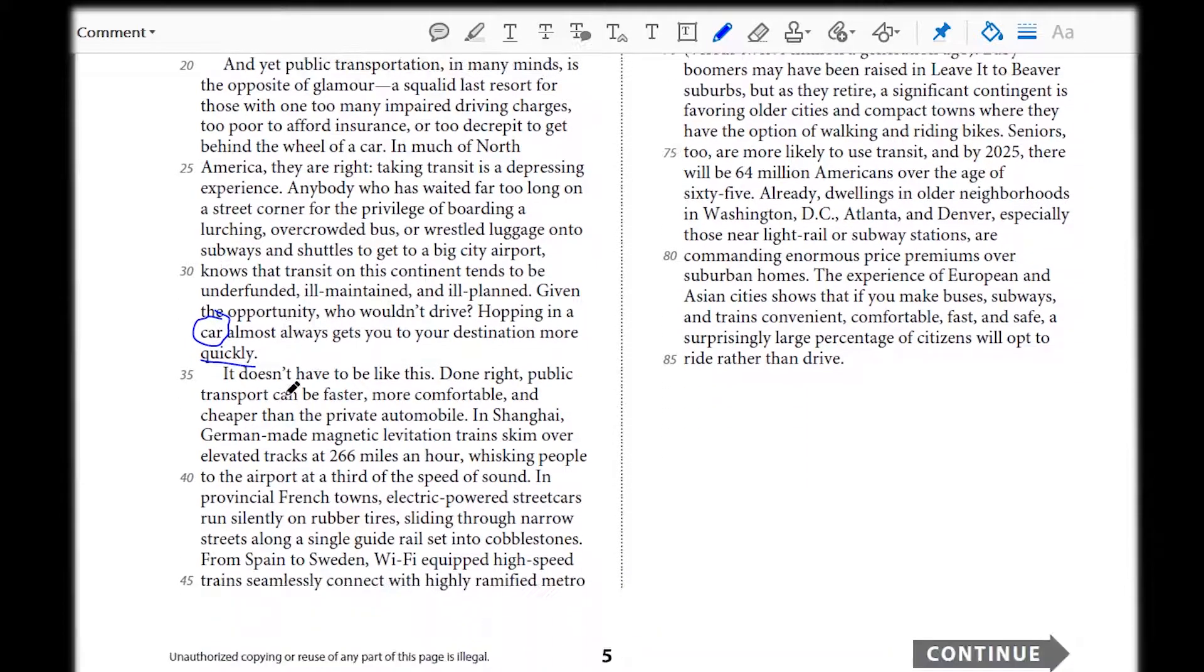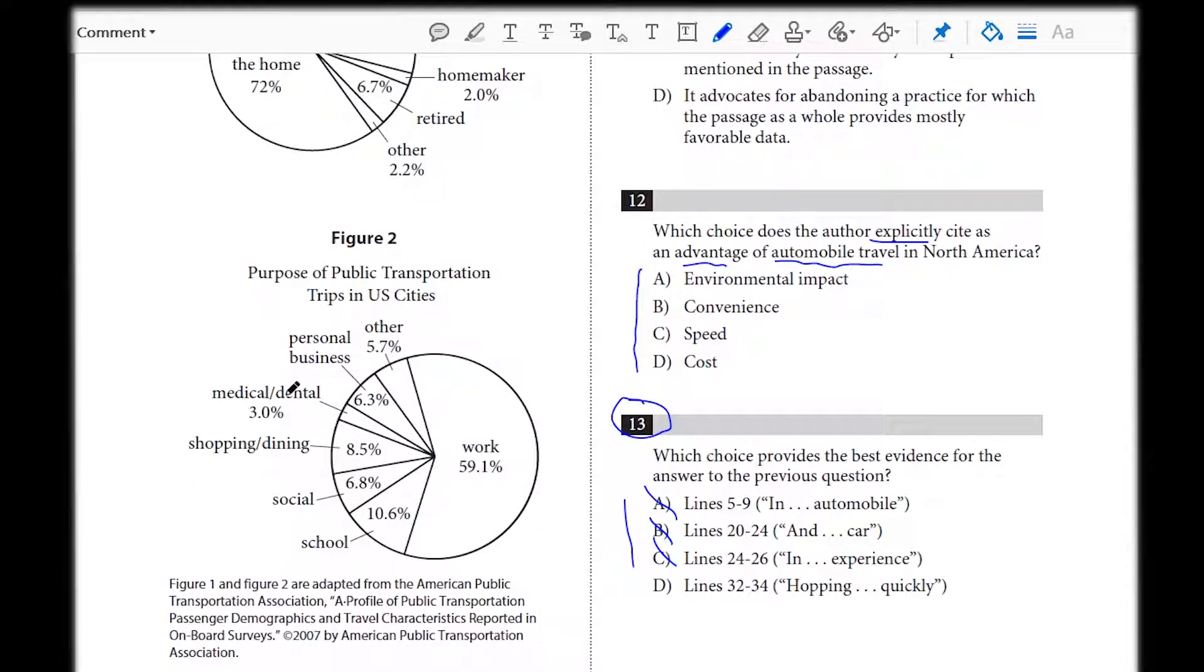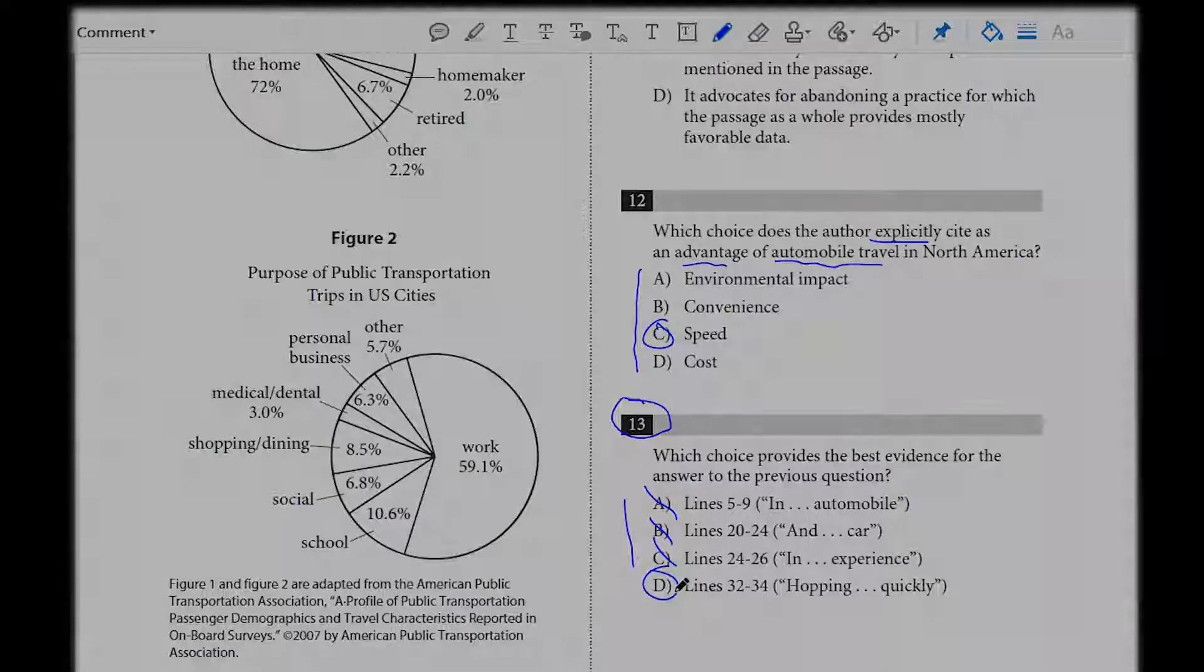None of our other options are speaking towards automobile travel at all, and especially not in North America. Only D is, and D is speaking directly towards speed, quickly. So, we're picking C, and we're picking D. How easy is that?